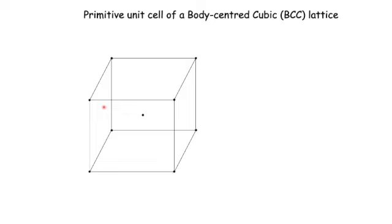Let us select our first primitive basis vector — the vector from the center to one of the corners of the cube. We call it A1. Similarly, we select vectors A2 and A3, again from the center to other corners. These three primitive basis vectors span a primitive unit cell for the BCC lattice.